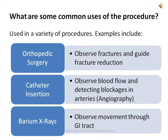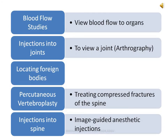Fluoroscopy can be used in a variety of procedures. In orthopedic surgery, it is used to observe fractures and guide fracture reduction. It can be used for catheter insertion to observe blood flow and detect blockages in the arteries — this procedure is called angiography. It can be used in barium x-rays where the individual swallows barium and the doctor can see movement through the GI tract. It is also used in blood flow studies to view blood flow to organs, and for injections into joints to view a joint, which is called arthrography.